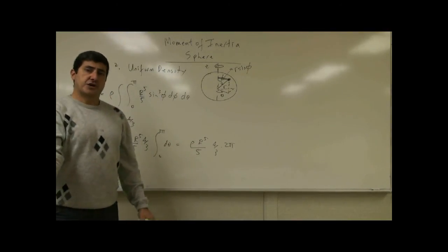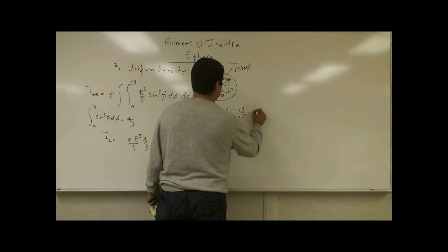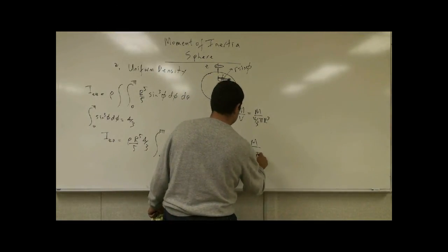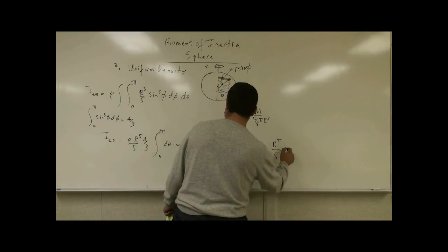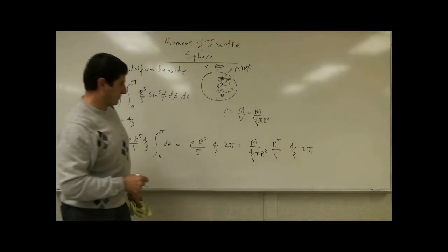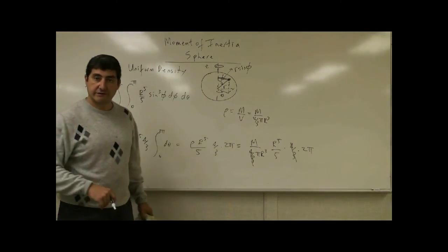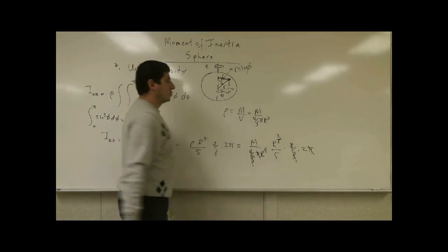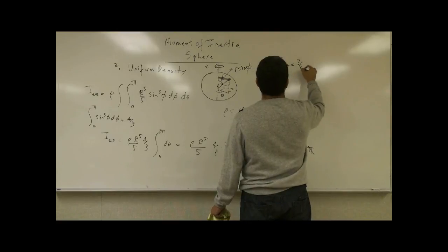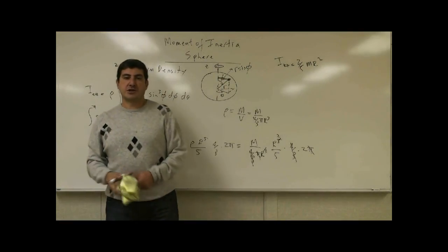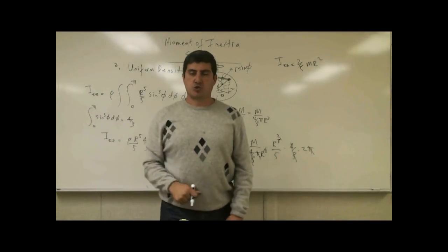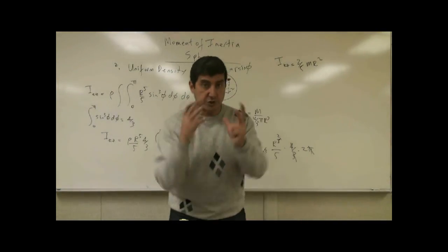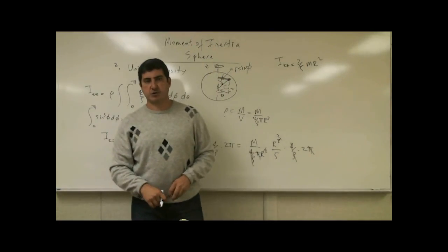The last step is substituting ρ = M / (4/3 π R³). The 4/3 cancels with the 4/3 from the sine³φ integral, the π cancels with the π, and R³ cancels to leave R². This gives I_zz = two-fifths m r squared. Using spherical coordinates, we didn't need the theorem that I_xx = (2/3) I_RR — we derived the same answer directly. With the spherical shell method, we first calculated I_RR and then took two-thirds of that result.